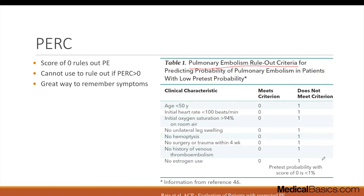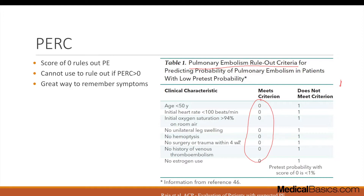The PERC criteria isn't something you need to memorize — it's on MDCalc and it's very intuitive. If anything is positive, they get a score of one, and you cannot rule out a PE; additional testing is required. However, if everything is zero — meaning low age, not tachycardic, good oxygen saturation, no unilateral leg swelling, no hemoptysis, no surgery or trauma, no history of DVT, and no estrogen use — then their PERC is negative and no additional PE workup is needed.